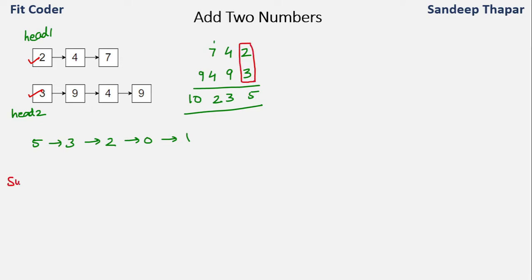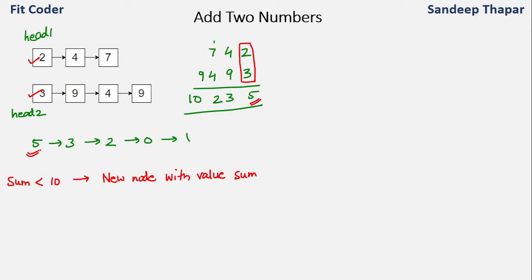If the sum of the digits is less than 10, we can simply create a new node with value equal to the sum. In this case 3 plus 2 is less than 10, so we create a new node with value 5, because each node of the output should also have a single digit. So if the sum is less than 10 we can simply create a new node.